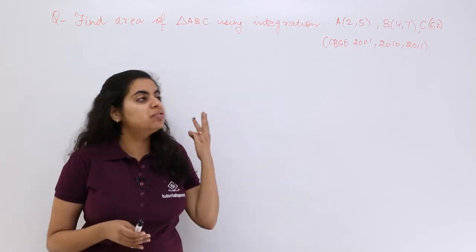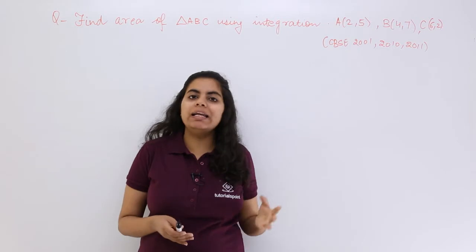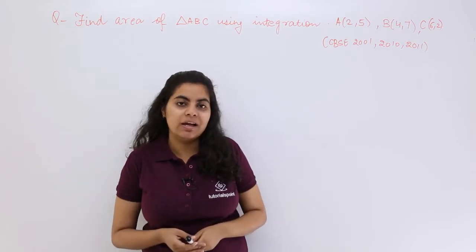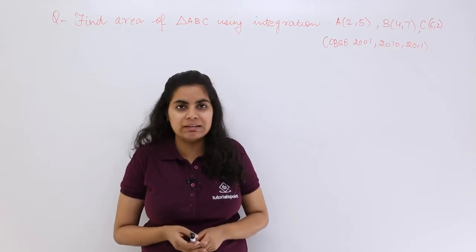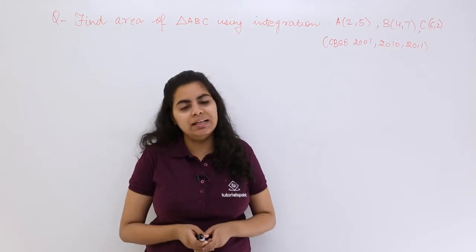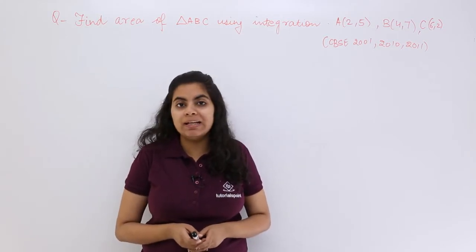As you know, if you have three coordinates given you can directly find the area of the triangle, but we have to find out not by the previous methods that we studied in our junior classes but by integration. So how to do it by integration?